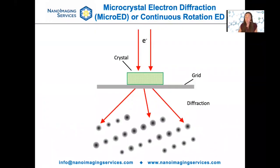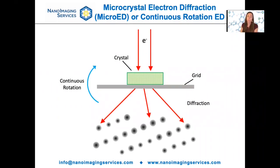Microcrystal electron diffraction, or micro-ED, also known as continuous rotation electron diffraction, works by placing crystals onto a TEM grid, putting that into a microscope, exposing the crystal to a very small electron beam, and collecting a diffraction pattern. When this is coupled with continuous rotation of the stage, we can collect a diffraction data set in the way the vast majority of x-ray crystallography data is collected, which allows us to use all of the software packages written for x-ray crystallography to process our data.